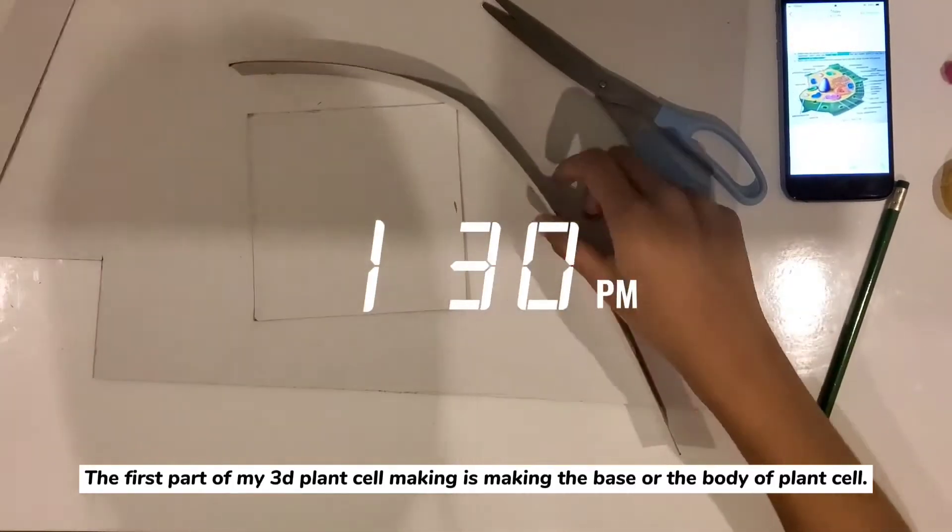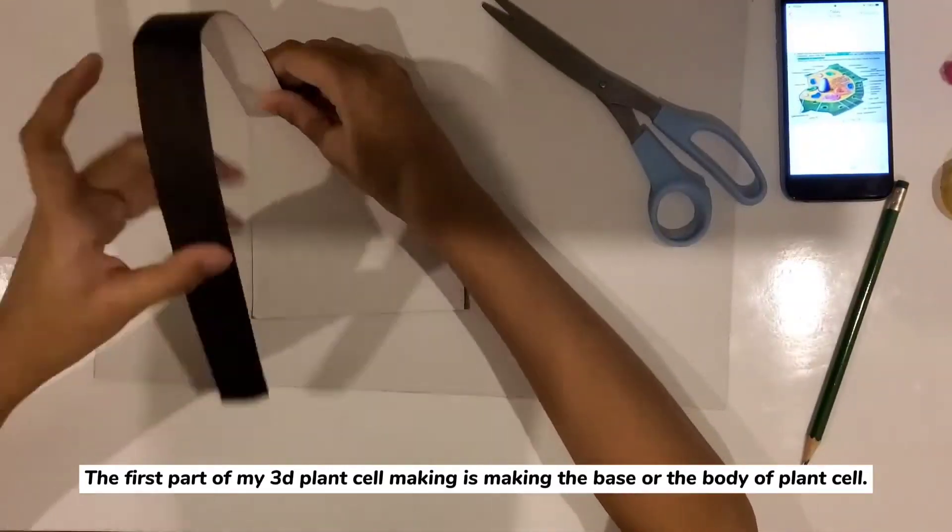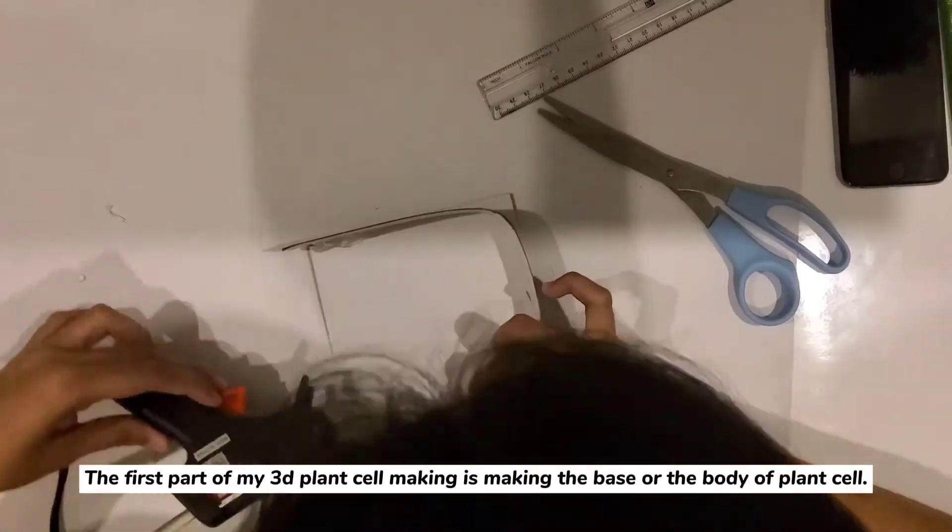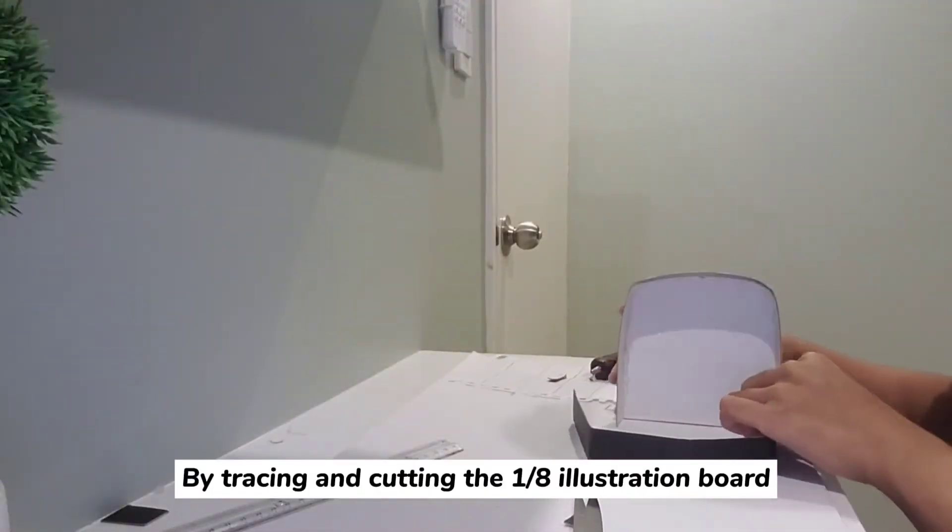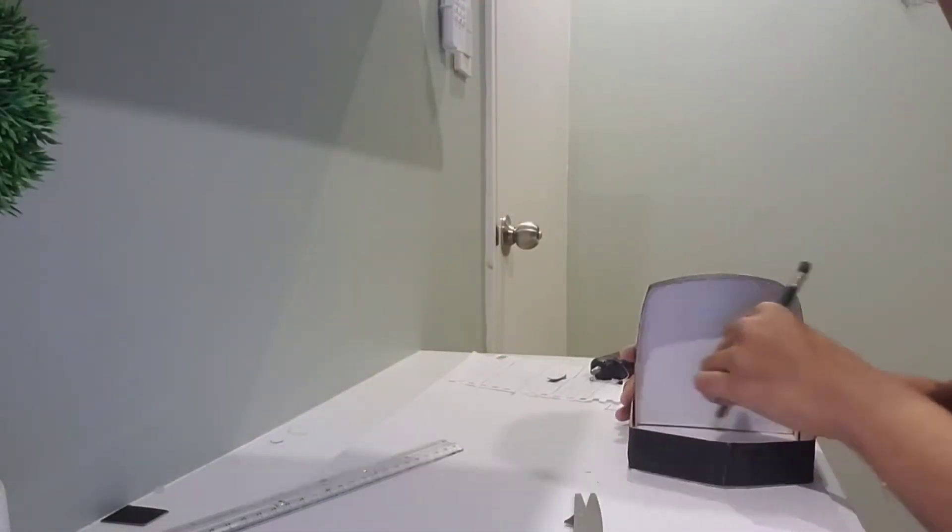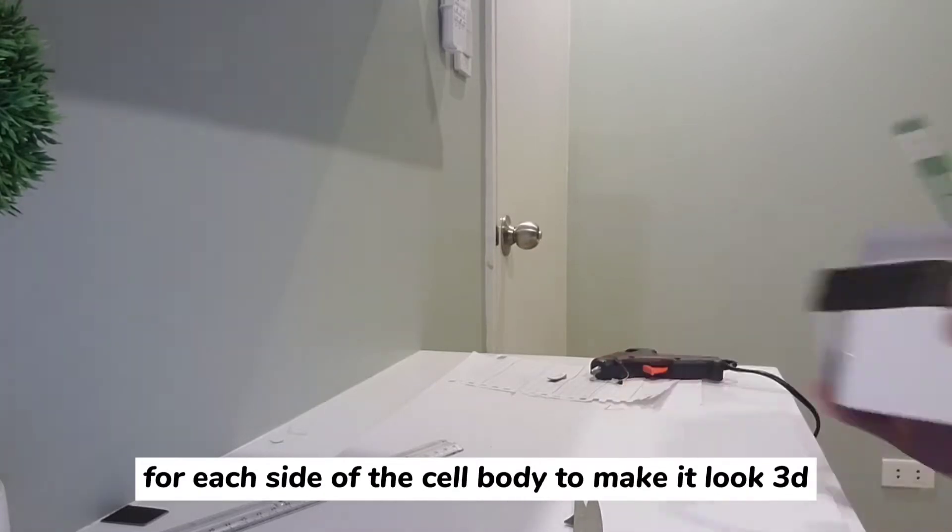The first part of my 3D plant cell making is making the base or the body of plant cell by tracing and cutting the 1-8 illustration board for each side of the cell body to make it look 3D.